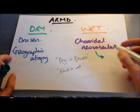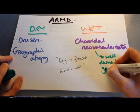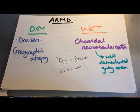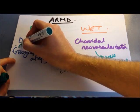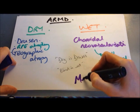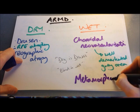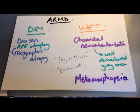Signs in wet AMD include a well-demarcated grey area or subretinal haemorrhage. In dry AMD you see drusen, geographic atrophy, and possibly atrophy of the retinal pigment epithelium. A particular symptom of wet AMD is metamorphopsia — distortion of lines — where classically patients will notice that the blinds in their house look a bit wavy.